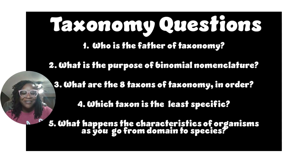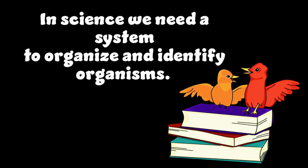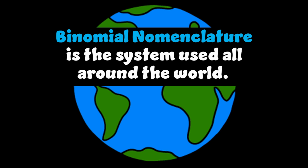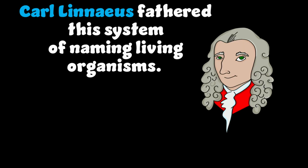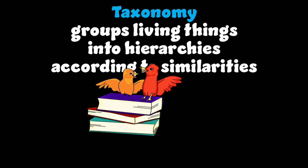In science we need a system to organize and identify organisms. Binomial nomenclature is the system used all around the world. This provides standard communications among scientists in different locations. Linnaeus followed this system of naming living organisms.